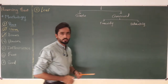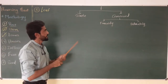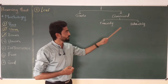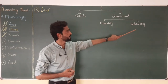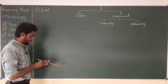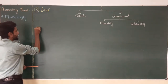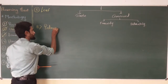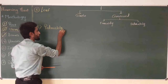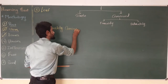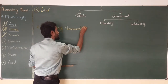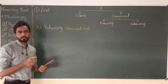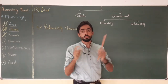In the last few videos we discussed in detail about the simple leaf and pinnately compound leaf. In this video we are going to talk about the last type of leaf, that is palmately compound leaf. It is the second type of compound leaf. In this type of leaf, generally multicostate venation is present, meaning the leaf shows multiple mid-ribs.